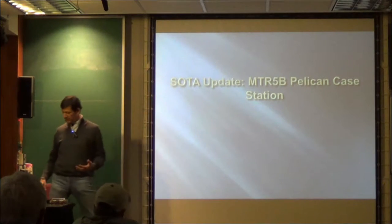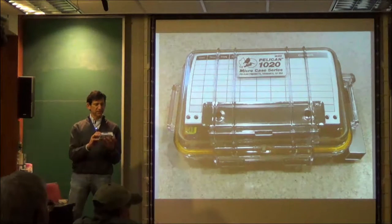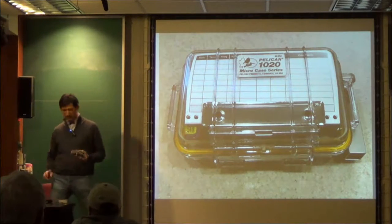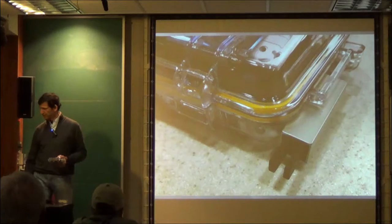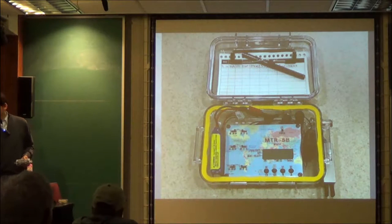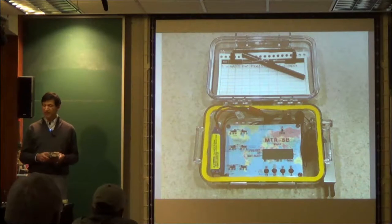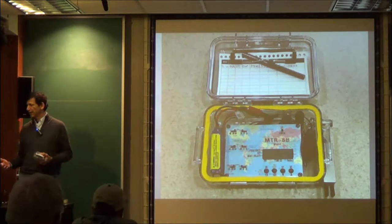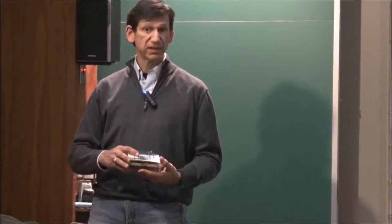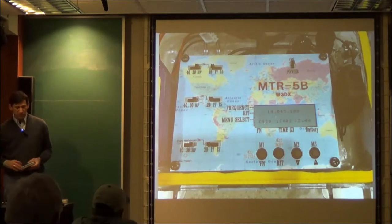I just wanted to show you my latest creation. So this is my SOTA station, and as you can see, the paddles deploy here, and this is a little LNR mountaintop radio, a five-bander. It puts out a full five watts. It's about the size of a cigarette pack. As you can see with the Pelican case, when you open it, you have something that you can log on. And then that's a close-up of what the radio looks like. So that was a fun project.